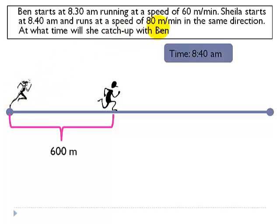Now, Sheila is starting at 8:40 am and she runs at a speed of 80 meters per minute.